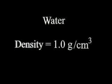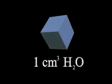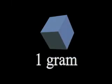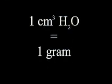That's interesting — one cubic centimeter of water has a mass of one gram. This is not a coincidence. If you research the history of the metric system, you will find that the first standard metric unit of mass, the gram, was defined as the mass of one cubic centimeter of water.